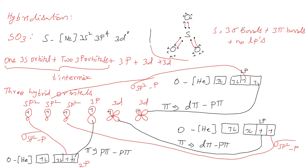In SO₃ there are three sigma bonds, all formed by sp²–p overlapping, so all three sigma bonds have the same nature. For pi bonds: one pi bond is p-pi–p-pi, and the other two are d-pi–p-pi bonds. So in SO₃ there is 1 p-pi–p-pi bond and 2 d-pi–p-pi bonds.